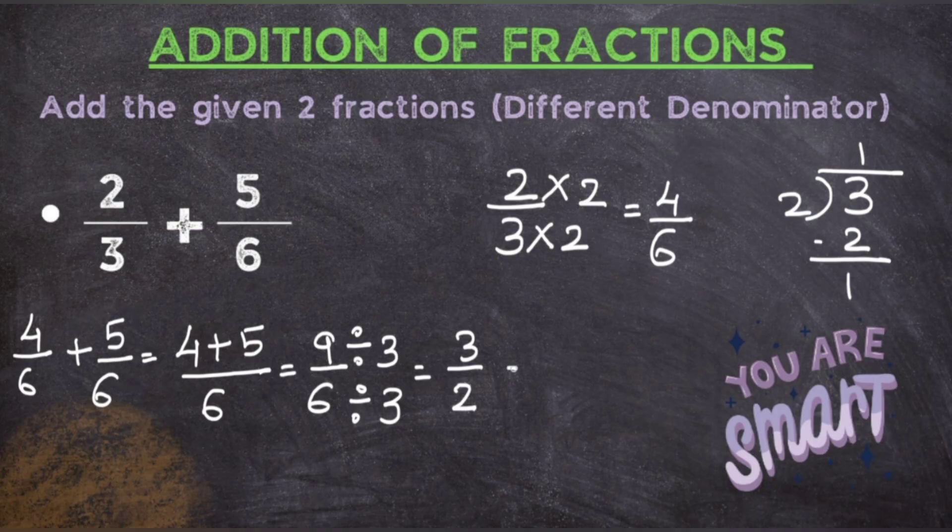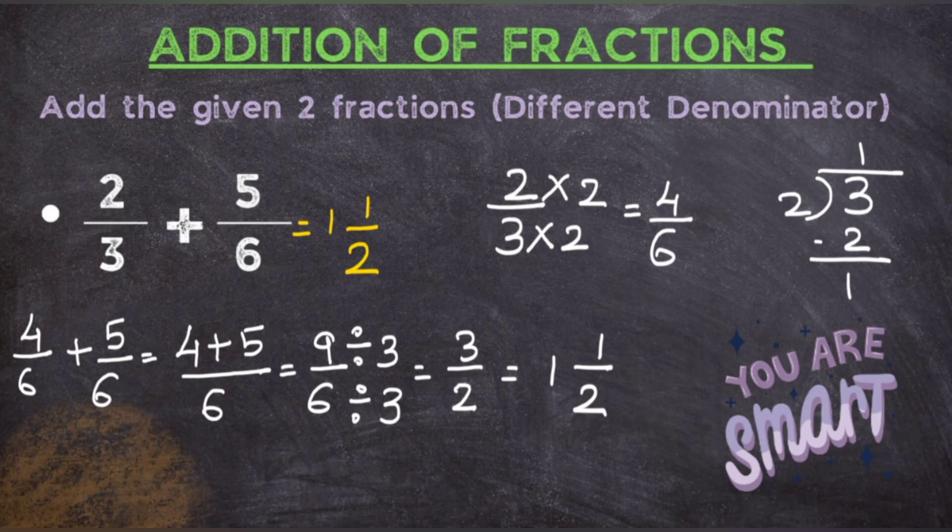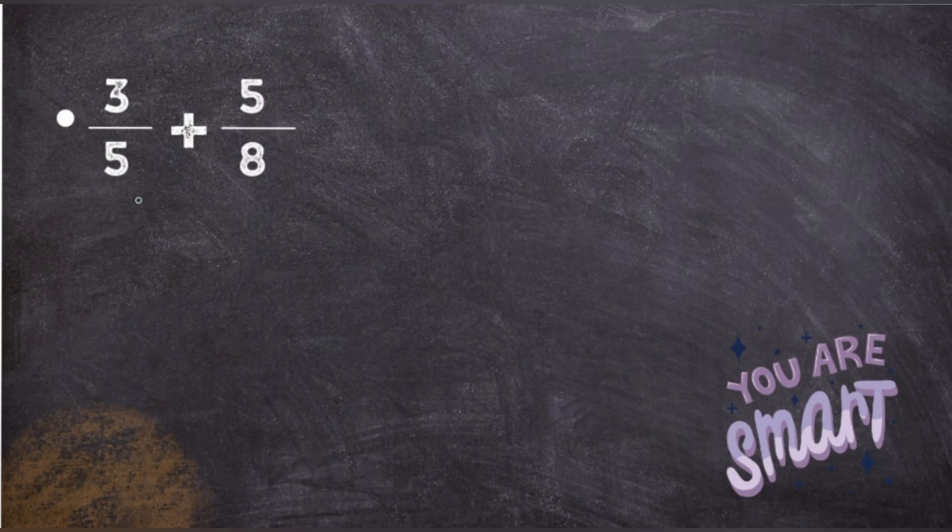So the answer will be 1 and 1 upon 2. The answer of 2 upon 3 plus 5 upon 6 is 1 and 1 upon 2. I know it is looking very confusing, but as you keep on practicing it becomes very easy and you will start solving the way I am solving it right now. Now let's take another question.